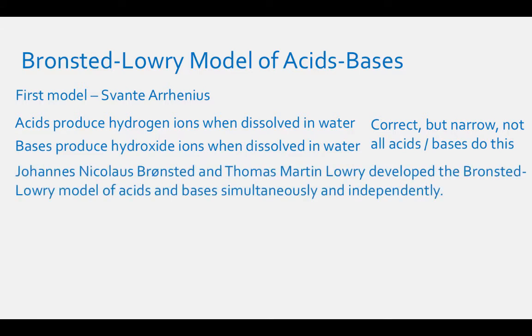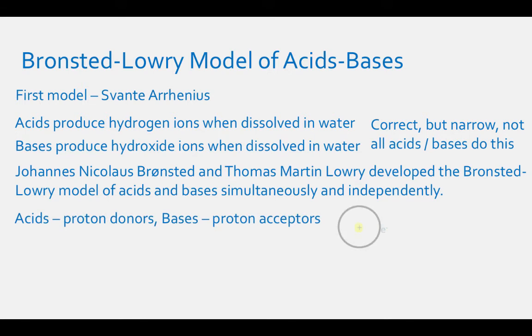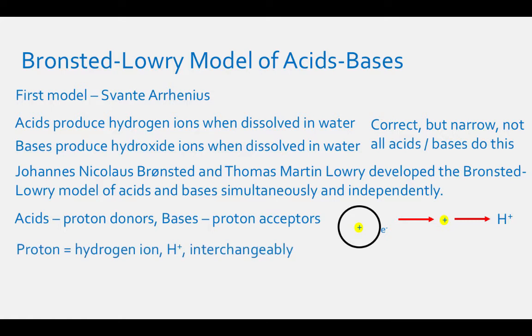Johannes Nicholas Bronsted and Thomas Martin-Lowry developed the Bronsted-Lowry model of acids and bases simultaneously and independently. This model says that acids are proton donors and bases are proton acceptors. A proton is just a hydrogen ion, because a hydrogen atom is a single proton surrounded by a single electron. When talking about acids and bases, we remove the electron to produce the H+ ion. We will refer to protons, hydrogen ions, and H+ ions interchangeably.